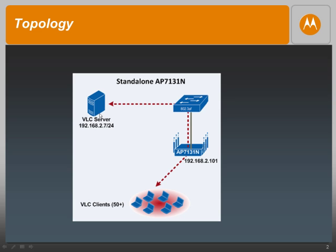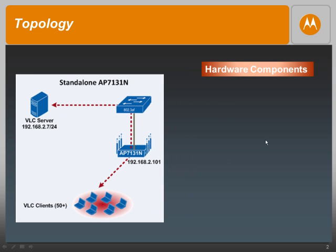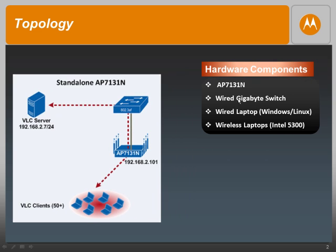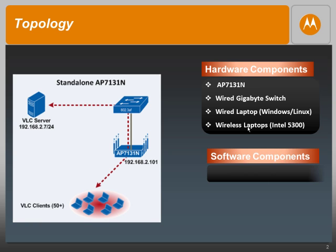The main hardware components in our setup are the AP7131N, a wired gigabit switch, a wired laptop on which the VLC media server is installed, and multiple wireless clients. In our setup we've used the Intel 5300 chipset. However, you can choose to use any 802.11N client as long as it can support 300 megabit data rates upstream as well as downstream. The main software component we've used is the VLC media player, which can be configured to act as a server or as a client.